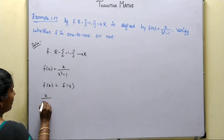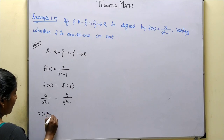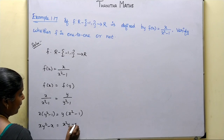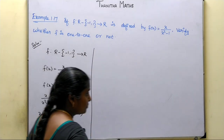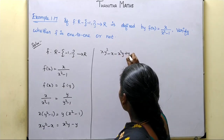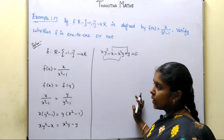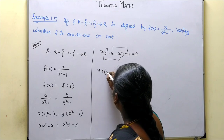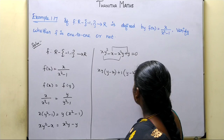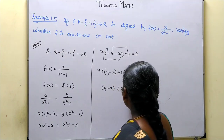Now, assume f(x) = f(y), that is x/(x²-1) = y/(y²-1). Cross-multiplying: xy² - x = x²y - y. Rearranging: x²y - xy² - x + y = 0, which simplifies to xy(x - y) minus (x - y) = 0.